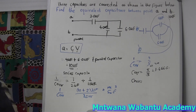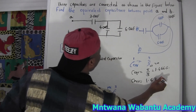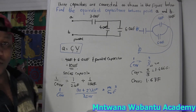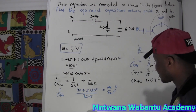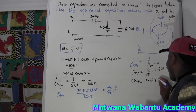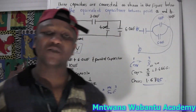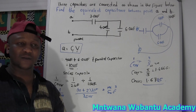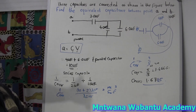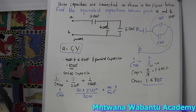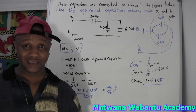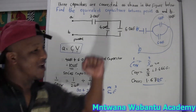So the capacitor equivalence is 1.67 microfarads — note it's microfarads because we were working in microfarads throughout. If you have any questions, write in the comment section and I'll definitely get back to you, or reach me on social media. Please subscribe, hit the like button, and share with a lot of people. Don't forget to donate — peace and love, we out.